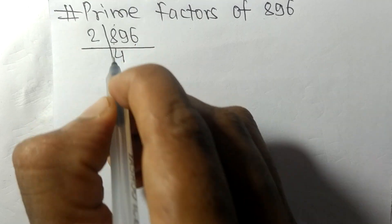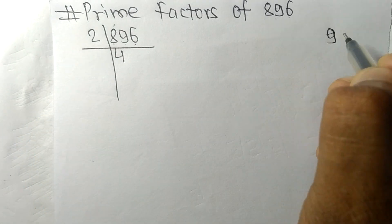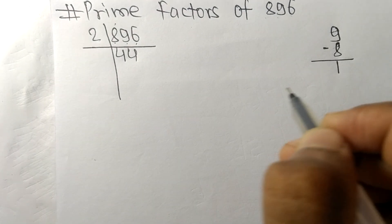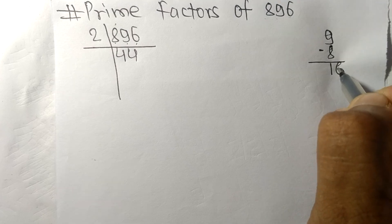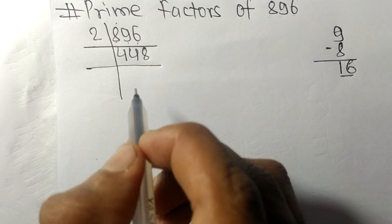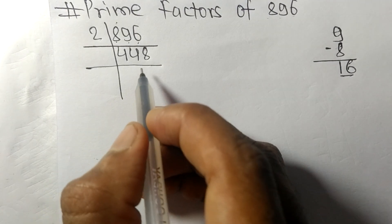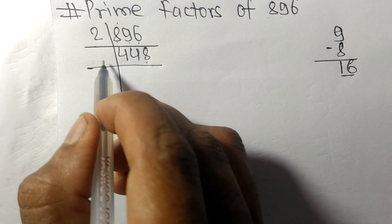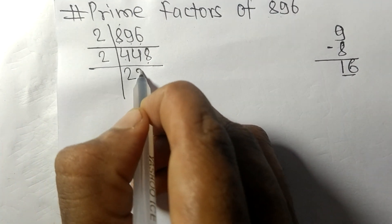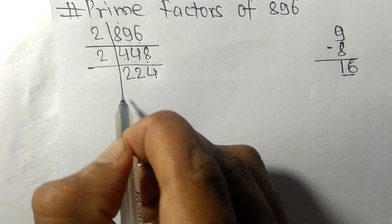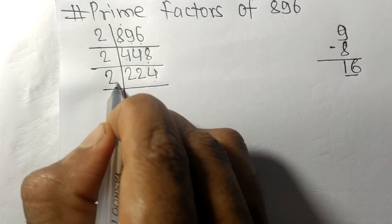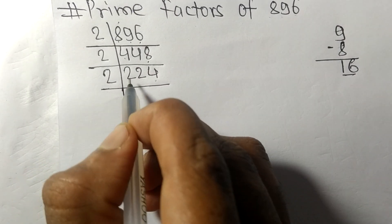We divide by 2: 2 times 4 is 8, bringing down gives us 16, 2 times 8 is 16, so we get 448. It has an even number 8 at the end, so it is exactly divisible by 2 again. 2 times 2 is 4, 2 times 4 gives us 224, which again ends in an even number 4, so it is divisible by 2.